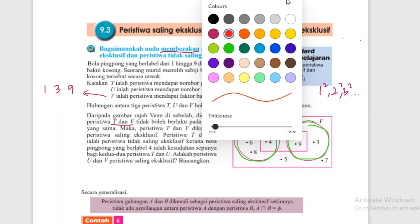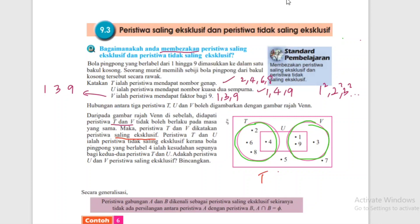T dan V saling eksklusif. Kenapa saling eksklusif? Dia tidak boleh berlaku pada masa yang sama. Peristiwa T dan U adalah peristiwa tidak saling eksklusif. Kenapa tidak saling eksklusif? Sebab ada yang digabung di sini - bola pingpong nombor 4 adalah kesudahan bagi kedua-dua peristiwa T dan U.